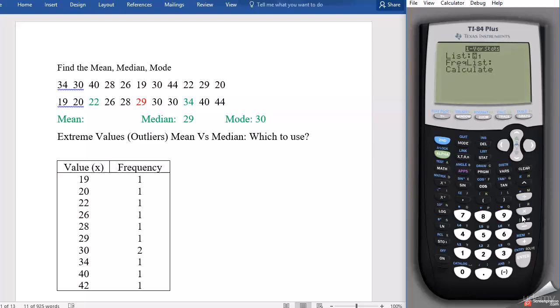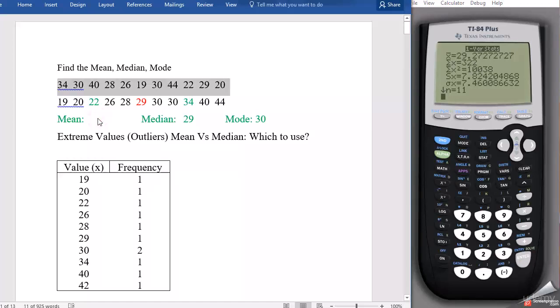Calculate, and we see the very first output here is the mean, x-bar. So the mean of these numbers is 29.27.